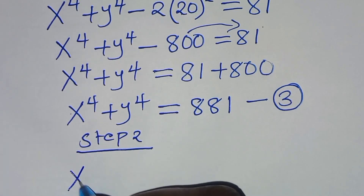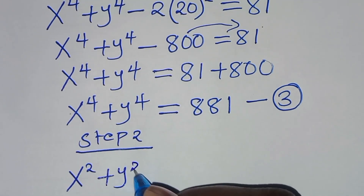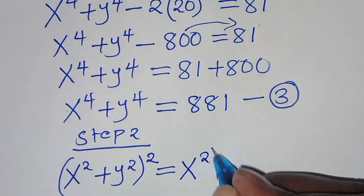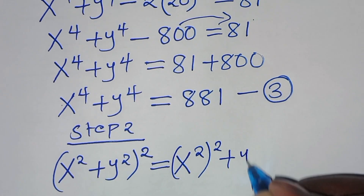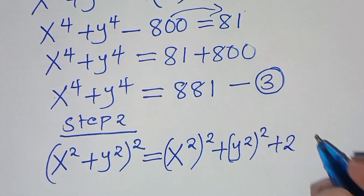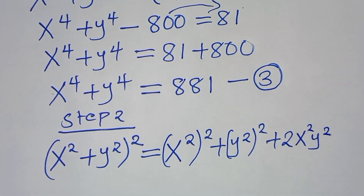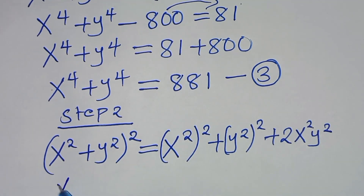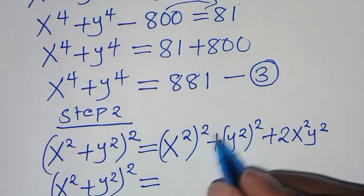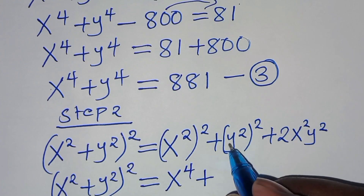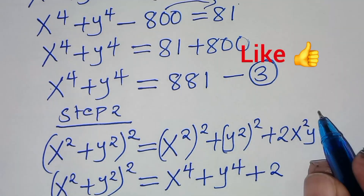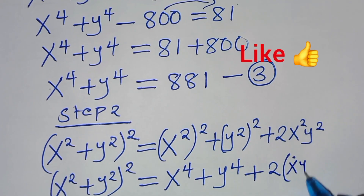Moving to step 2: we have that x squared plus y squared, raised to power 2, which equals x to the power 4 plus y to the power 4, plus 2 times x squared times y squared. This can be expressed as x to the power 4, plus y to the power 4, plus 2 times (xy) raised to power 2.